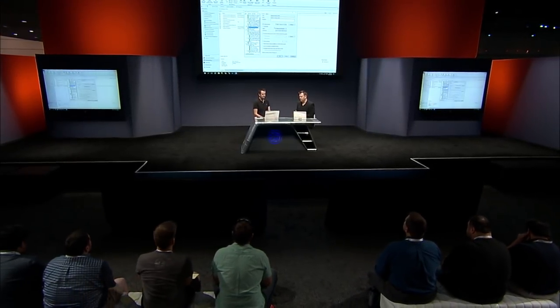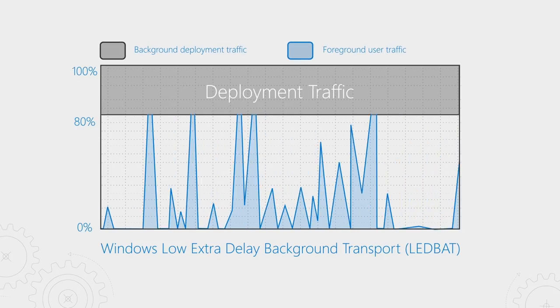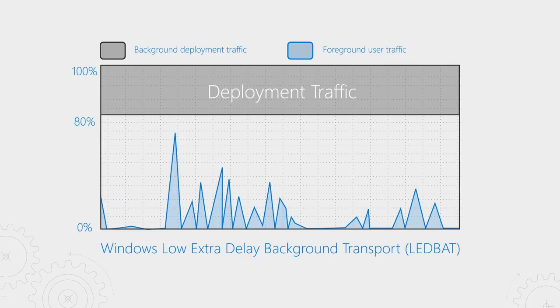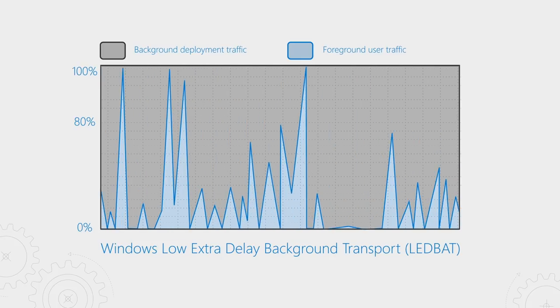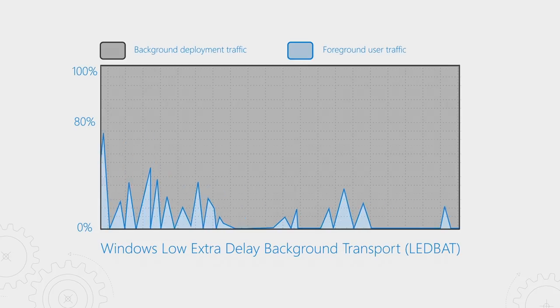Network optimizations are a big one that improve OSD and all the other features. Config Manager peer cache adds native peer-to-peer capabilities so you can share content between clients on the same subnet in a branch office location and serve that content without the need for a local distribution point. This also works within Windows PE — so once the first client in the subnet has the content, it becomes the peer for clients being built alongside it. We've also added support for Windows Server 2016 LeadBat, which is a true network optimization that uses most available bandwidth without impacting foreground traffic and affecting users' line of business activities.